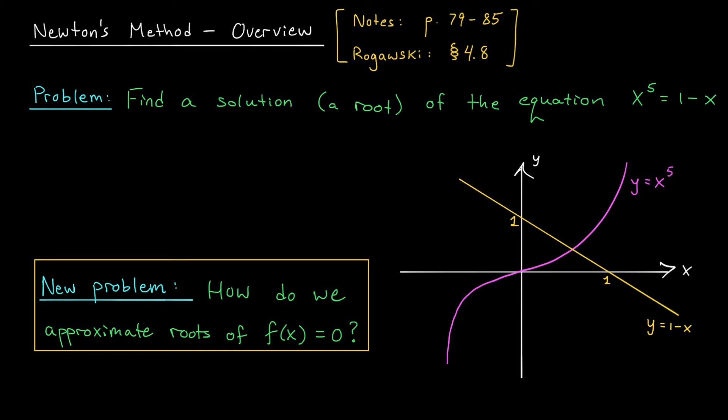We're going to kick things off with a lesson on Newton's method. This is a procedure for approximating the solutions, or the roots, of some kind of an equation. As a motivating example, suppose we wish to solve the equation x to the 5 equals 1 minus x. How would you do it?